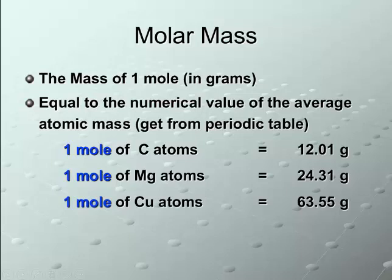If you look at copper, the average atomic mass of copper is 63.55 grams. So, that's what one mole of copper atoms has the mass of.